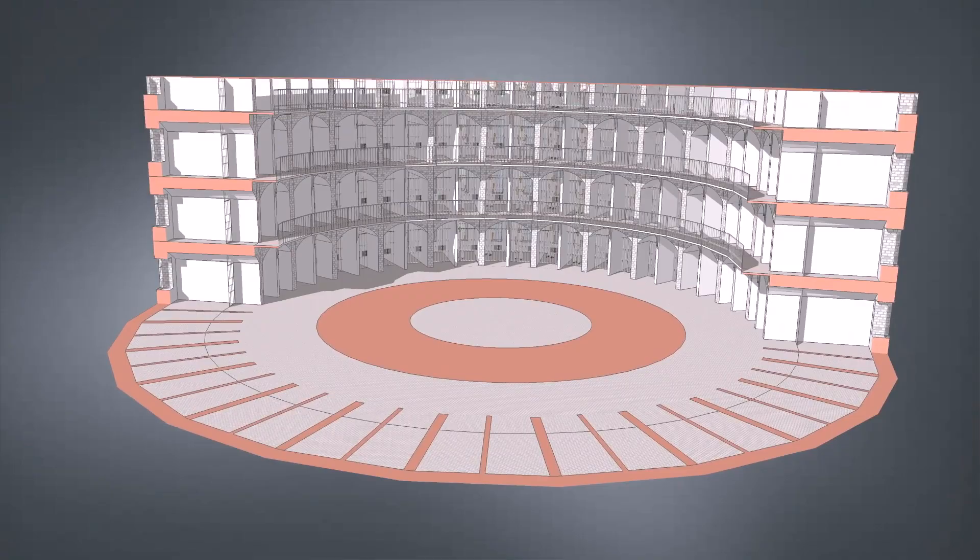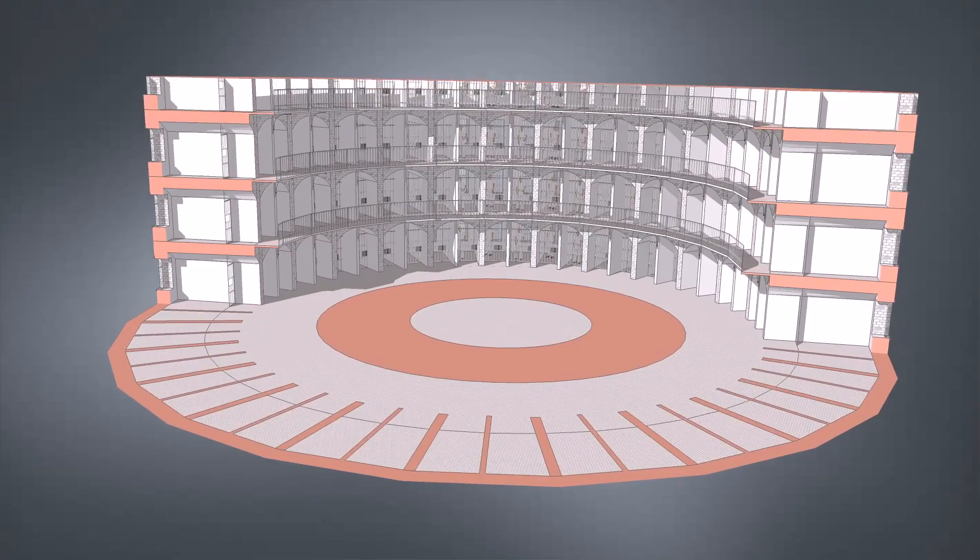Each cell has a toilet, a bed and space to work. The cells rise six floors.